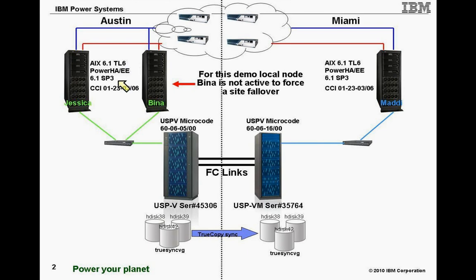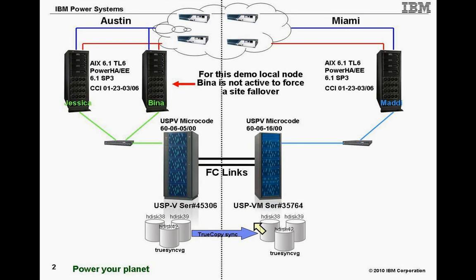We're using AIX 6-1 TL-6 and Power HA 6-1 SP-3. Power HA 6-1 SP-3 is required — it's the version that added this support. The Hitachi version of the CCI can be seen here. We have two US PVs. You can see the microcode levels configured along with the serial numbers of the two units. We have three LUNs configured on each of the two Hitachi storage subsystems. In our particular case, the HDISC numbers do match, which is not a requirement but is nice from a management perspective.